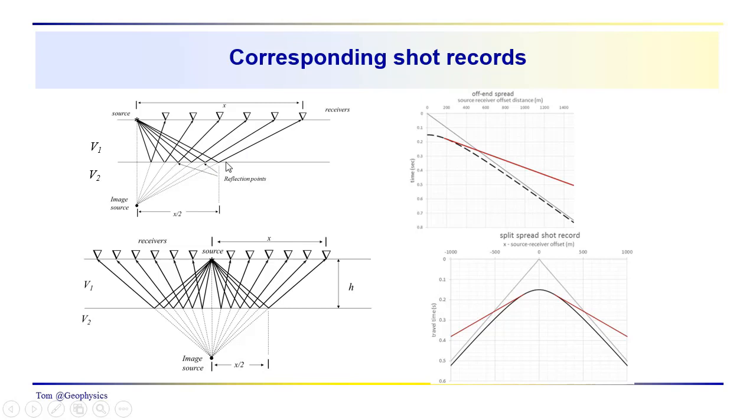And then we also get a critical refraction from the base of the layer that has a velocity V2, assuming that V2 is greater than V1. It has a slope which is greater than V2, which makes the slope of the critical refraction less than the slope of the direct arrival. We also know that the reflection event is asymptotic at large x to the direct arrival. So we have these basic relationships that I think you'll remember from before.